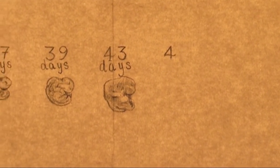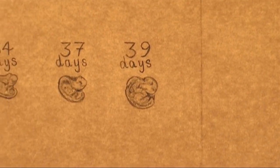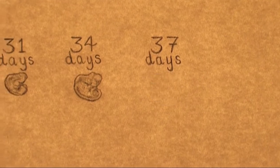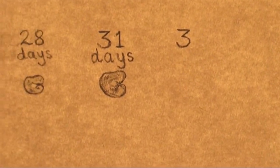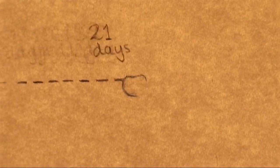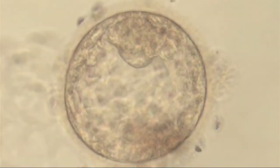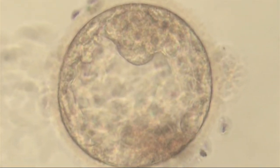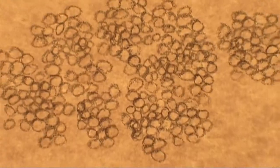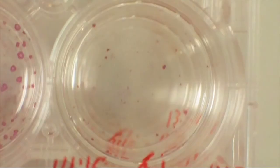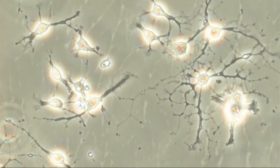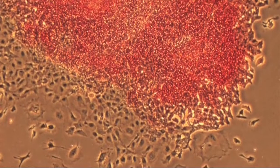In einem ganz frühen Entwicklungsstadium gibt es eine andere Art von Stammzelle. Sie ist kontrovers. Sie kann zu jeder spezialisierten Zelle werden: die embryonale Stammzelle. Diese Zelle kommt aus der Blastozyste, einem Embryonalstadium vor der Einnistung in die Gebärmutter. Embryonale Stammzellen können zu Herz-, Blut-, Gehirn- oder Hautzellen werden, je nachdem, wie man sie behandelt.